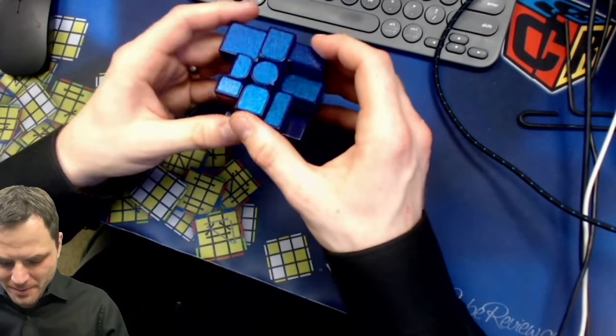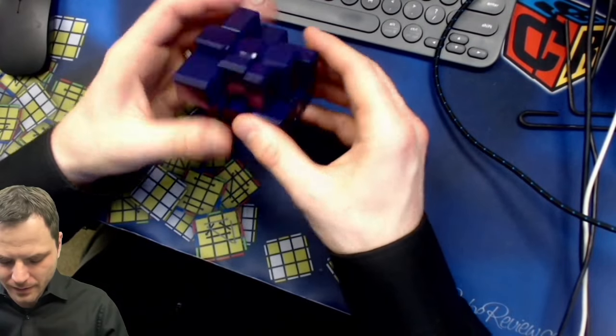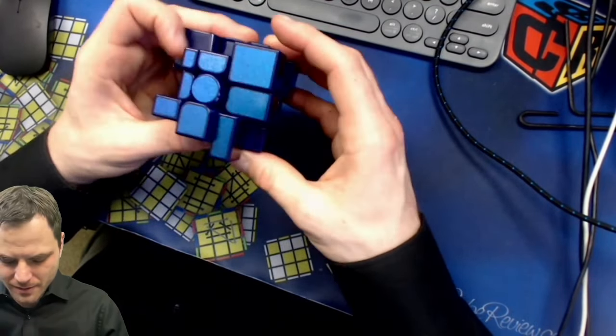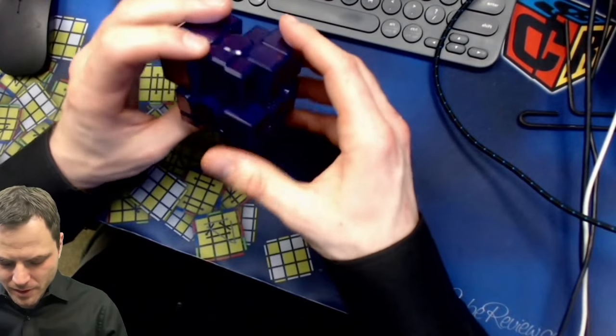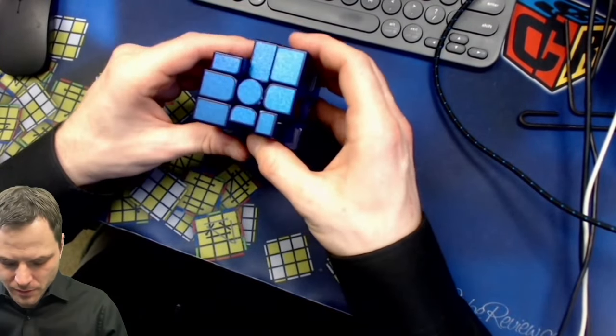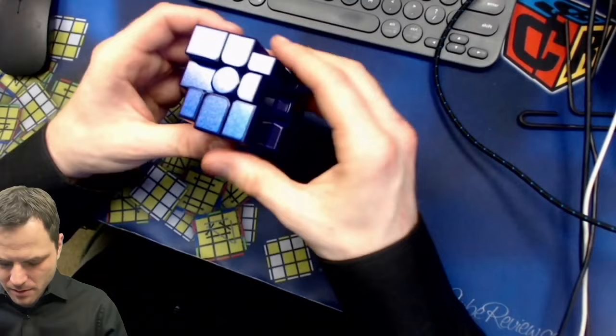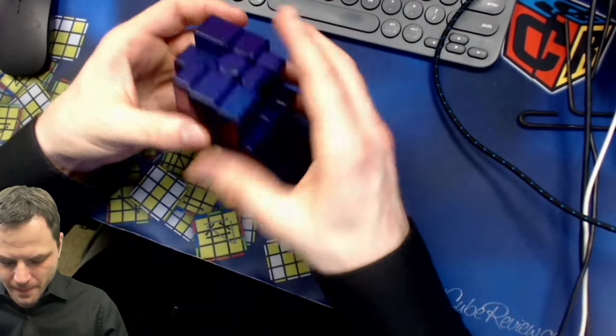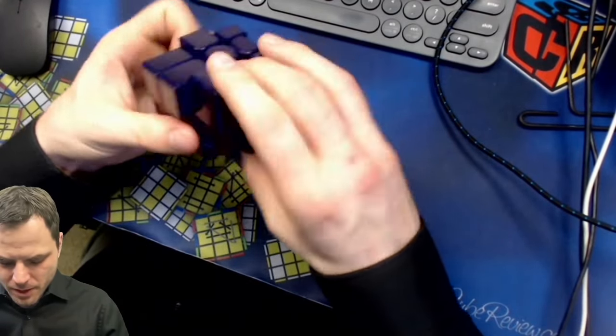Got a COLL, don't know which one it is. I'm just going to do corners, corners and then is this, yeah, J perm.